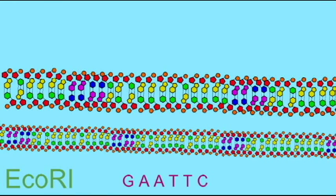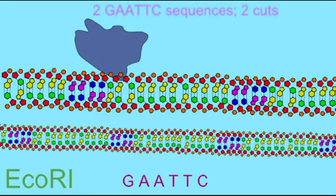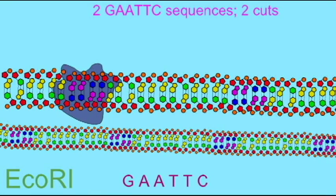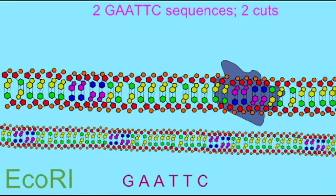If this is a linear piece of DNA, then that creates two pieces. If this was a circular piece of DNA, then there is only one single piece.